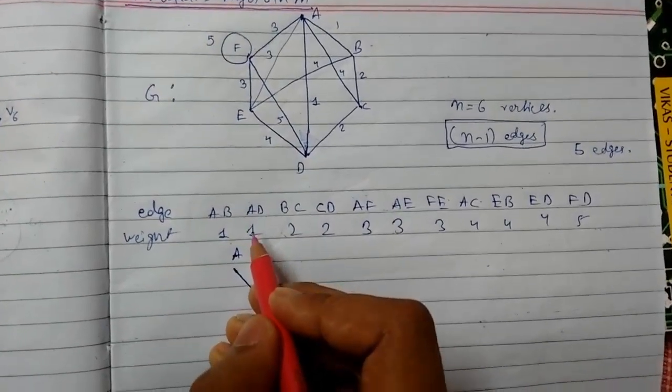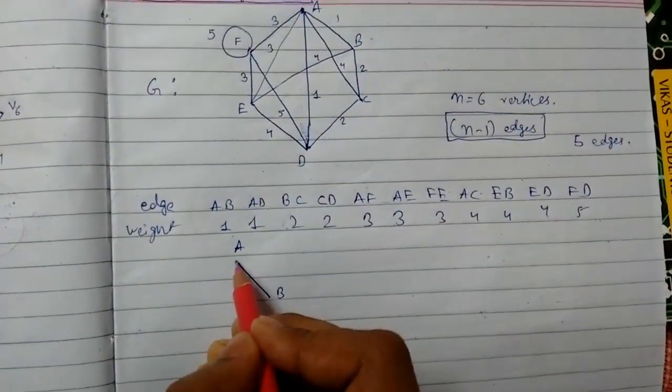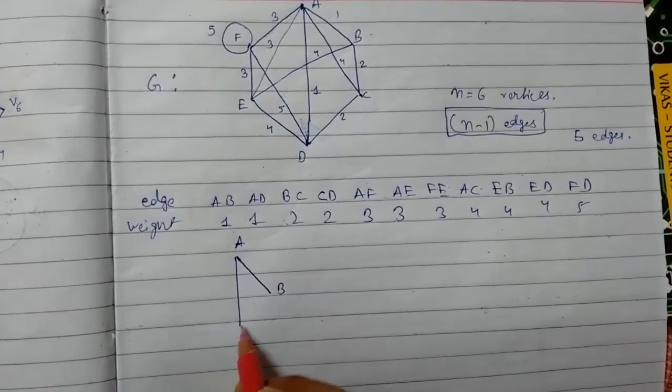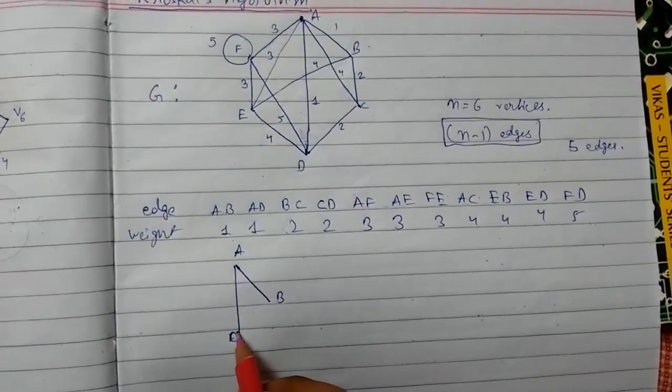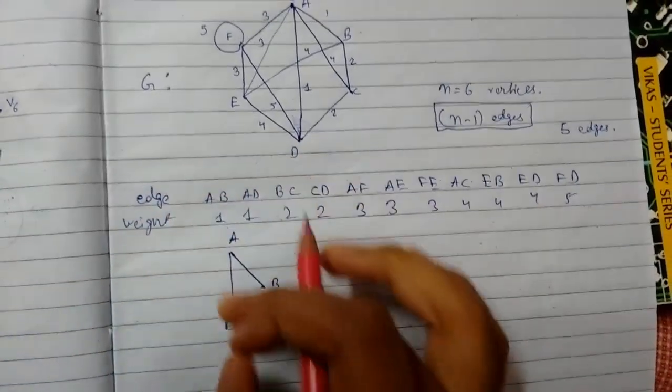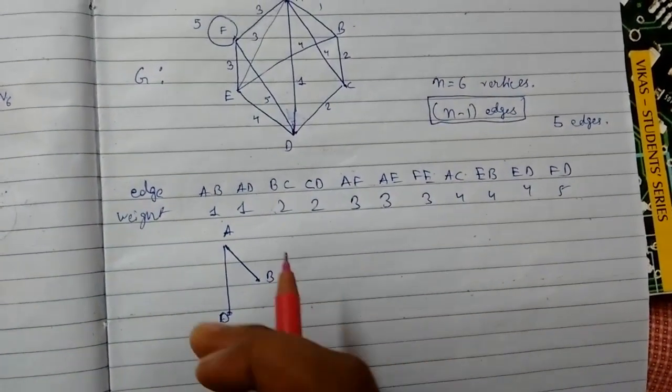Now we will select AD, so AD is here. See, all the single steps should be done stepwise. You need to write every step.